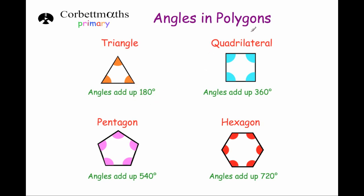A quadrilateral — the four angles in a quadrilateral will always add up to 360 degrees, and that doesn't matter what type of quadrilateral it is, whether it's a square, rectangle, kite, trapezium, parallelogram, rhombus, etc.